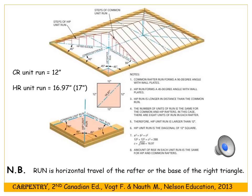The hip rafter has the same rise as the common rafter but a different run. To calculate the run we go back to the unit common rafter, where the run was 12 inches. If we made a square that was 12 inches by 12 inches and ran across the diagonal at 45 degrees, we would get the unit run of the hip rafter. Using Pythagoras' theorem, this is 16.97 inches, or approximately 17 inches.